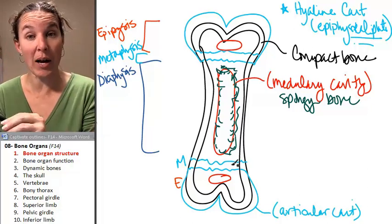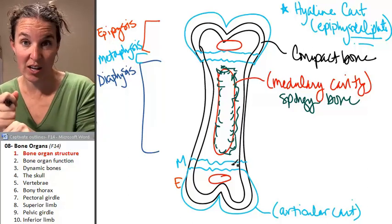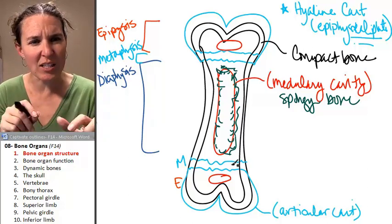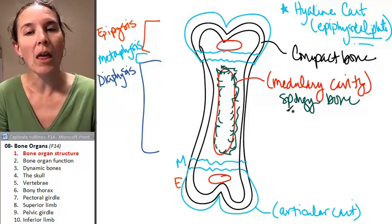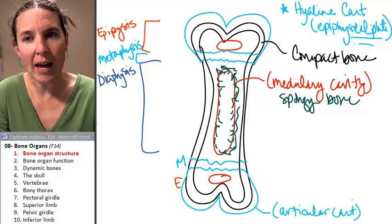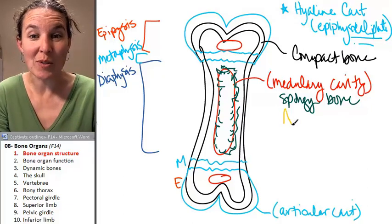And if we had a cross-section of a long bone, we'd be able to see the places where we would have compact bone, which is really hard and solid, and then spongy bone, which is more porous and exactly what you would expect.